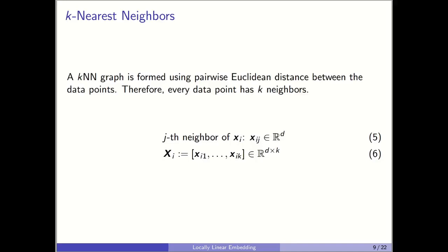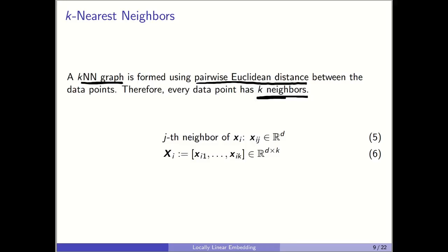In step 1, k-nearest neighbors: you already know what a k-nearest-neighbor graph is. It is constructed using pairwise Euclidean distances between every data point, so every data point has k neighbors. For every data point x_i we find a matrix X_I showing its k neighbors, denoting the j-th neighbor of x_i accordingly. We will use this in the next steps.